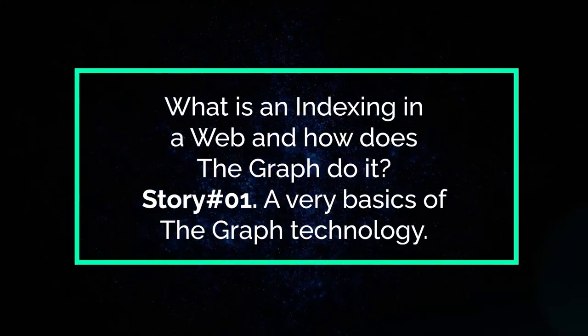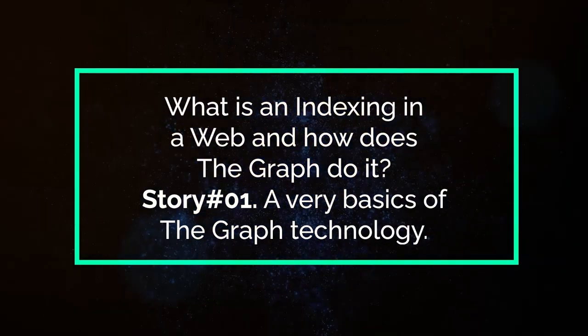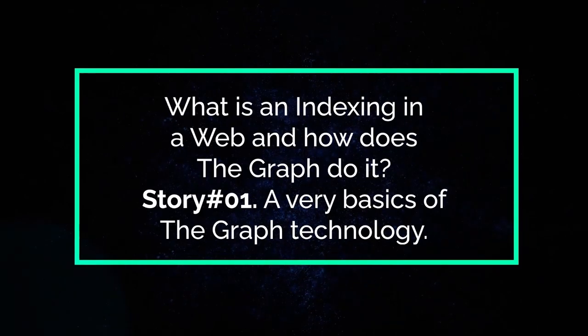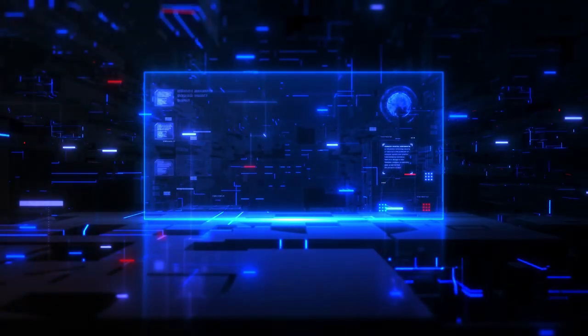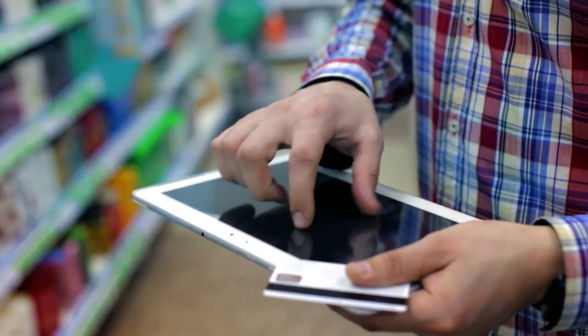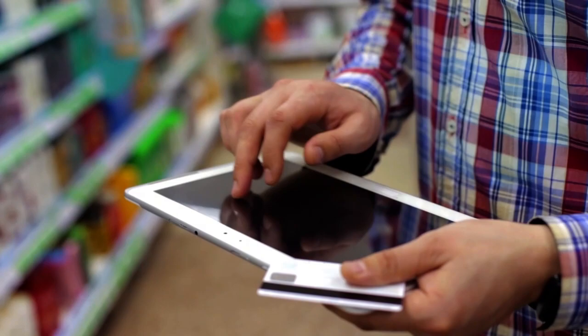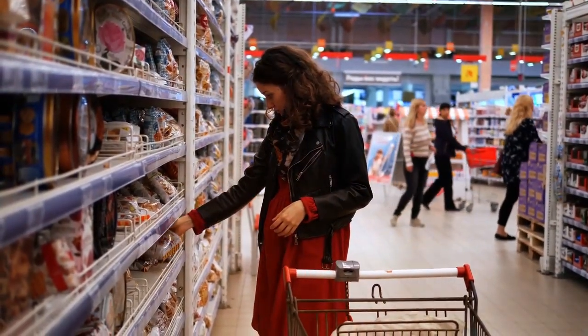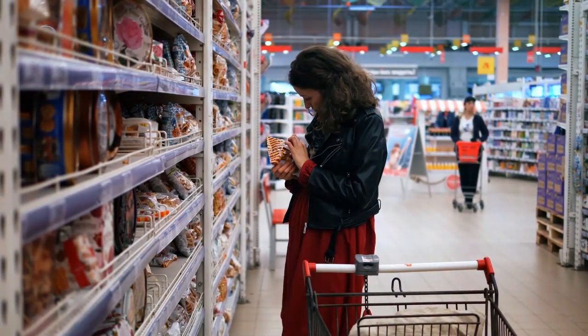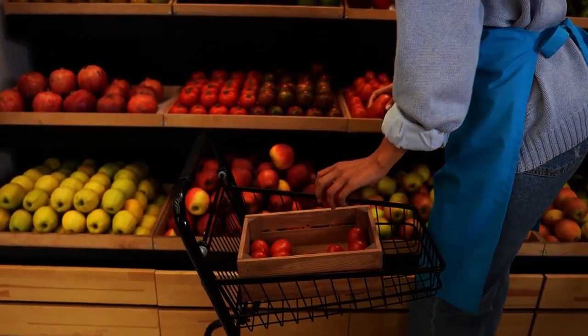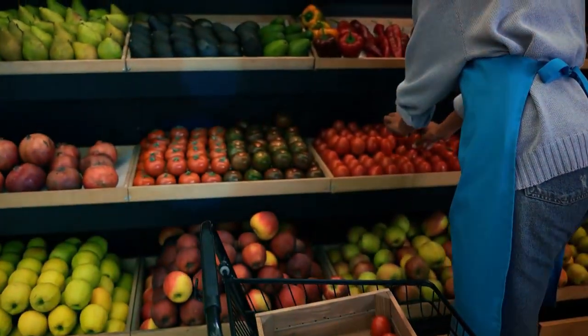What is indexing in the web and how does The Graph do it? We all have tremendous amounts of data around us — lists for shopping, to-do lists for work, calendar schedules, infinite data on the internet. When you compile a list of what to buy during your next grocery store visit, you usually do this as a sequence of items. The goods on the list are sorted in some way, usually by importance.